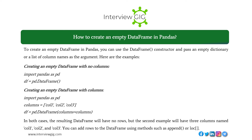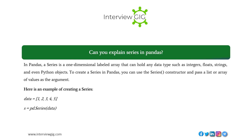To create an empty DataFrame in pandas, you can use the DataFrame constructor and pass an empty dictionary or a list of column names as the argument. For example: df = pd.DataFrame() creates an empty DataFrame with no columns. Or: columns = ['column1', 'column2', 'column3'], df = pd.DataFrame(columns=columns) creates an empty DataFrame with three named columns. You can add rows using methods such as append() or loc.